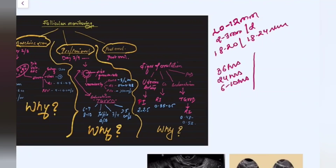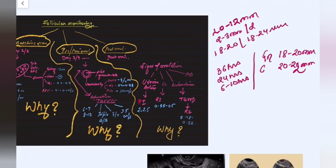In stimulated cycles, we trigger ovulation via beta-HCG IM injections. When gonadotropin is used as the ovulation-inducing agent, we give the trigger when the dominant follicle reaches 18 to 20 mm. When clomiphene citrate is used, we give the trigger when the size reaches approximately 20 to 22 mm. By observing the cumulus oophorus and follicle size we can precisely predict the time of ovulation.